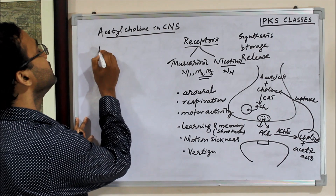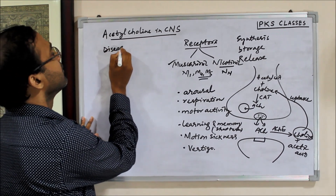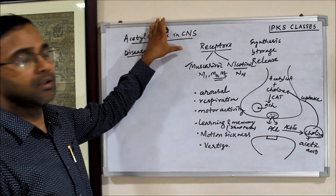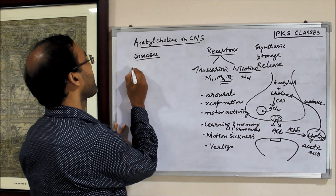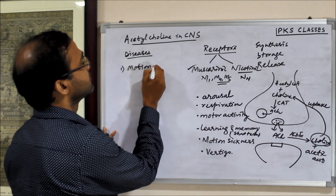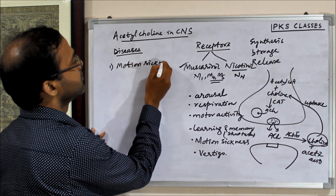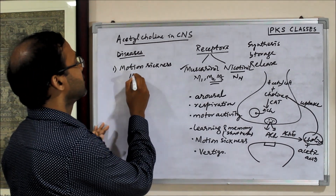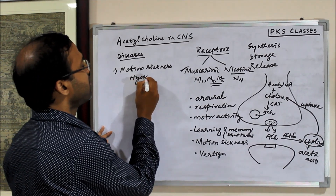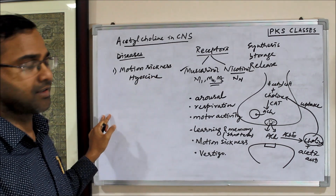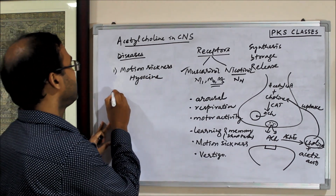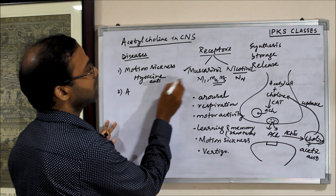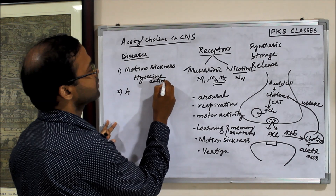The diseases in which we can use drugs acting on acetylcholine include motion sickness. In motion sickness, anticholinergic drugs like hyoscine are the drugs of choice. So these are anti-muscarinic drugs.